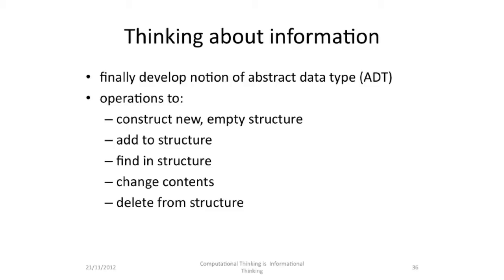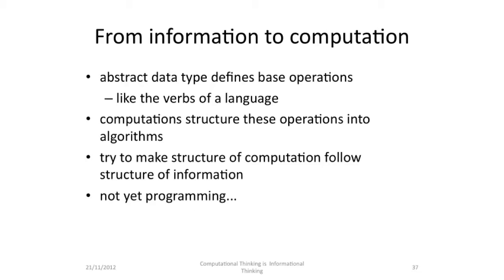It's useful here to develop the notion of an abstract data type. An abstract data type has operations to construct a new empty structure, or to add to the structure, or find in a structure, or change in a structure, or delete from a structure. We can see an abstract data type as defining basic operations — they're a bit like the verbs in a language. So we can use the ADT to structure how we talk about computations. The computation itself structures the operations into algorithms. So we try to make the structure of the computation follow the structure of the information, but this is not yet programming.